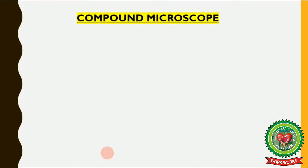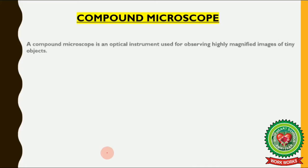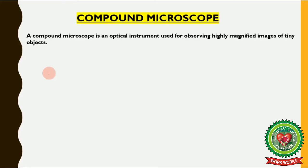What is a compound microscope? A compound microscope is an optical instrument used for observing highly magnified images of tiny objects.